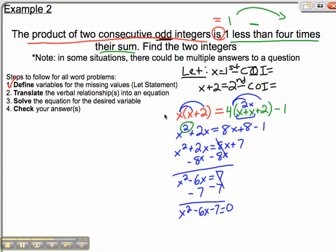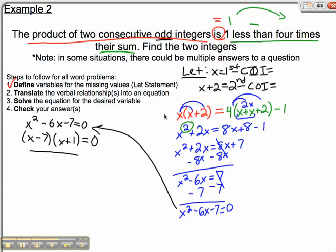Once you get it equal to zero, it's basically what we did before. So let's bring it up. Factor the trinomial, two numbers that multiply to negative seven and add to negative six. First of all, you split up the x squared. It's negative seven and positive one. We set both factors equal to zero. And I get x equals seven and x equals negative one.